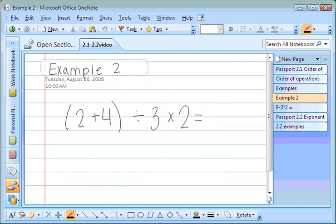Here's a second example for order of operations. First step is to do things within the grouping symbols. We have a grouping symbol here. 2 plus 4 equals 6, so we complete that first. We drop the rest of the problem down next to it.